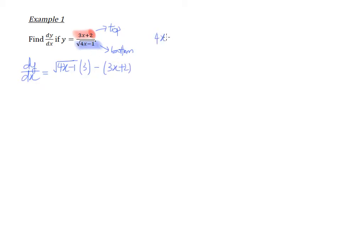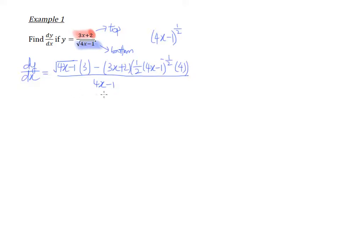Differentiating the bottom is interesting because this is actually 4x minus 1 to the power of half. You don't think of it as being a denominator — just differentiate as it is. This is going to be a chain rule. So we're going to bring down the half, and the 4x minus 1 remains, and the power becomes negative half. And we differentiate the inside, which gives us a 4. So the entire thing is divided by the bottom squared. Since the bottom is a square root, when we square it, the square root disappears.